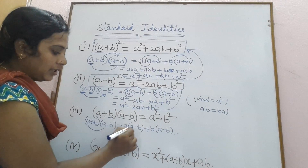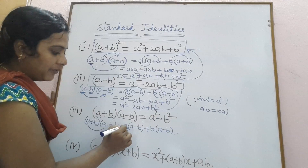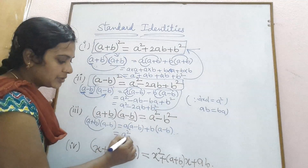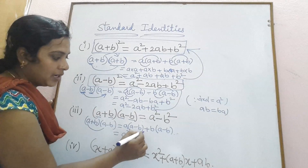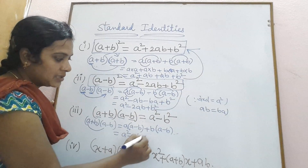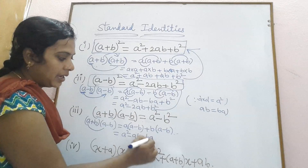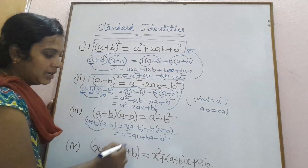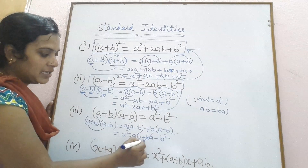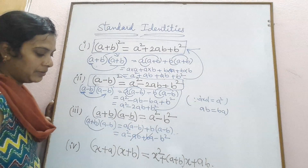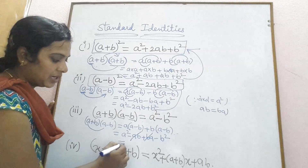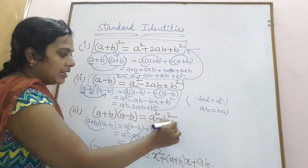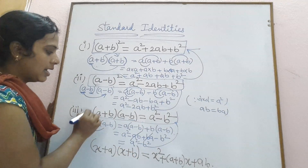Now, a into a gives a squared. Since a is positive and b is negative, plus into minus gives minus ab. Then plus b into a gives ba; and plus into minus gives minus b squared. So we have a squared minus ab plus ab minus b squared. The plus ab and minus ab cancel each other. The remaining terms are a squared minus b squared. That is the third identity.